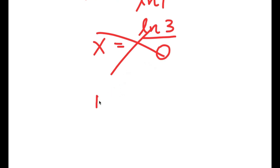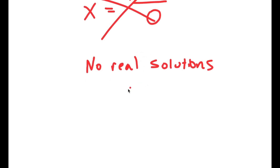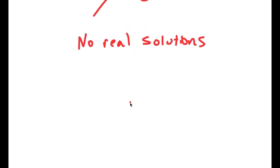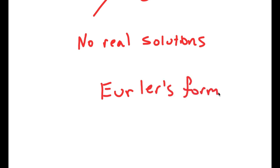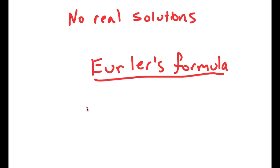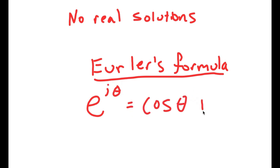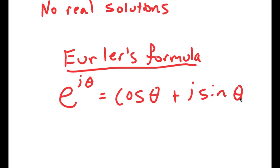However, this just means that there are no real solutions. But there are different types of solutions. So what I'm going to do to solve this equation is recall Euler's formula. And if you don't know what this is, it states that if I have something in the form e to the power of i times theta, this is equal to cosine of theta plus i times sine of theta. I know this may seem a little complicated right now, but just bear with me.